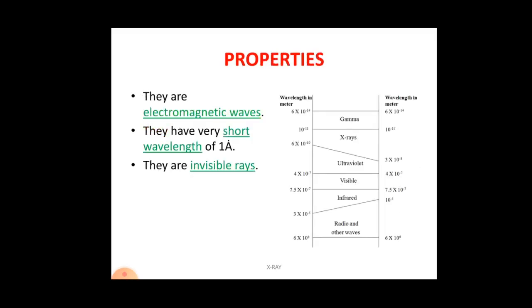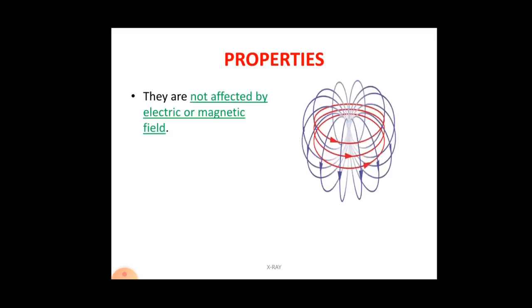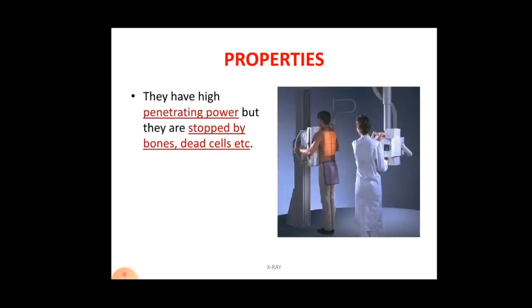The properties of x-rays: they are part of electromagnetic waves, with gamma rays on one side and ultraviolet rays on the other. They have a very short wavelength, generally around one angstrom — one angstrom equals 10 to the power minus 10 meters. X-rays are invisible to our eyes. They are not affected by any electric or magnetic field — passing through such fields has no effect on x-rays.